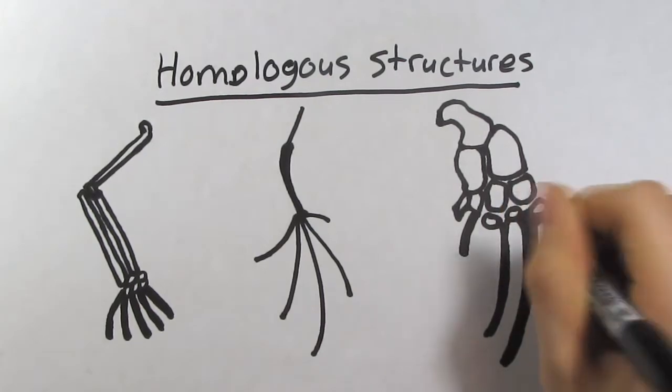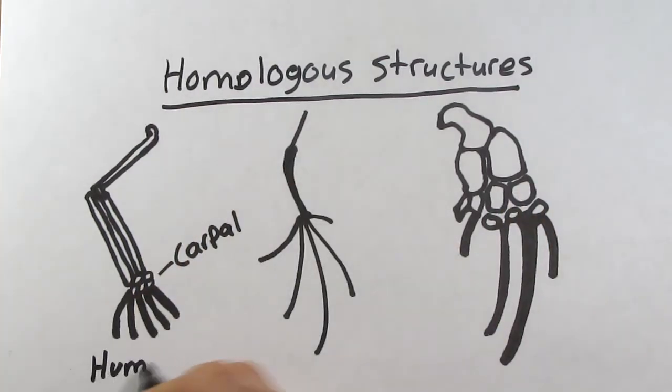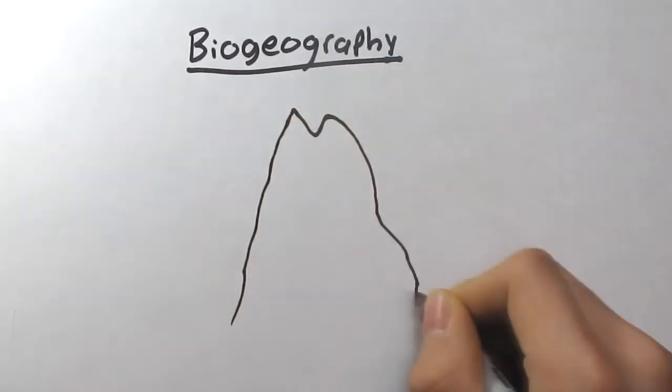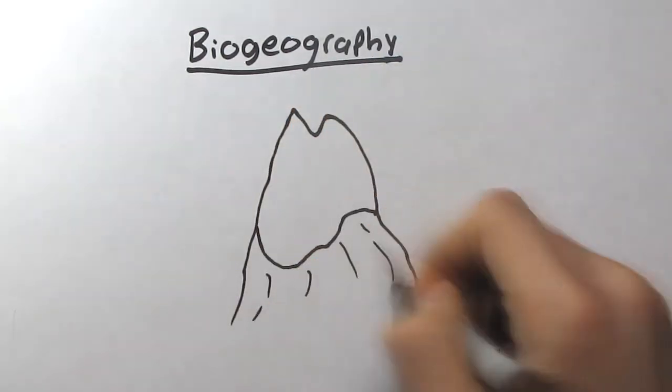We each use our four limbs for totally different purposes. Bats fly, whales swim, and we use our hands to pick up or throw things. Now when it comes to species that are very similar to each other, their distribution around the world or their biogeography is also explained extraordinarily well by the theory of evolution.